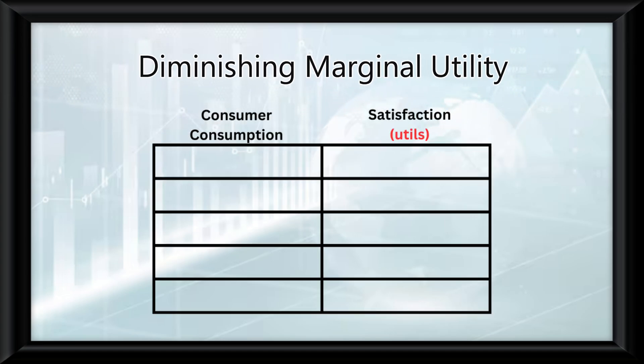Diminishing marginal utility means that as a consumer consumes more of a good, the additional satisfaction they get from each extra unit decreases.